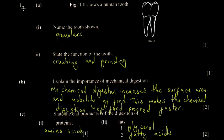On question 1a, we're told that this is a human tooth. We actually have four types of human teeth: the incisor, the canine, the premolar, and the molar. The question is how do you identify this particular tooth. The canine has a pointed tip that looks like this.